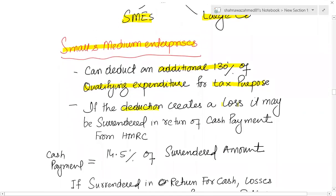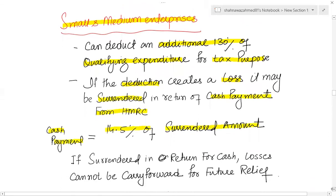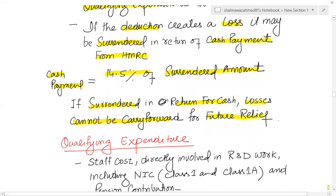If that deduction creates a loss, it may be surrendered in return for a cash payment from HMRC. If profit is not enough to offset against, you can ask HMRC for a cash payment equal to 14.5% of the amount surrendered. If surrendered for cash, those losses cannot be carried forward for future relief. You have the option to surrender or, if you don't want to surrender, get the relief now.